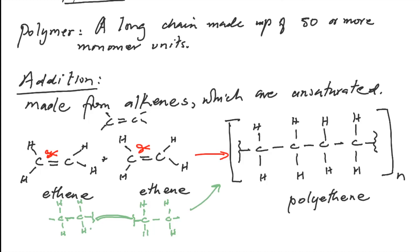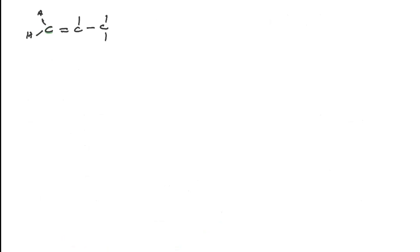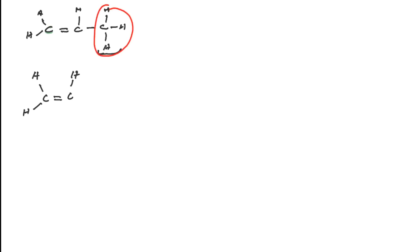That was ethene. If we were to use propene, the polymer from that would be polypropene. This is what propene looks like. For uniformity and to make things easier, we normally condense the methyl group and rewrite propene as CH₂ with a carbon-carbon double bond, an H, and then the methyl group condensed into CH₃. So if we have many propene molecules lined up like this, the same thing applies.